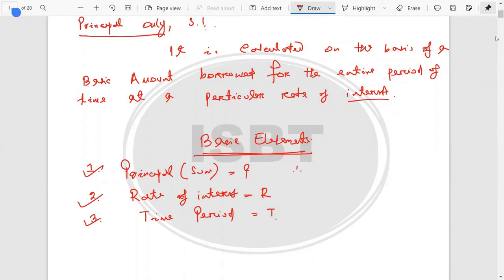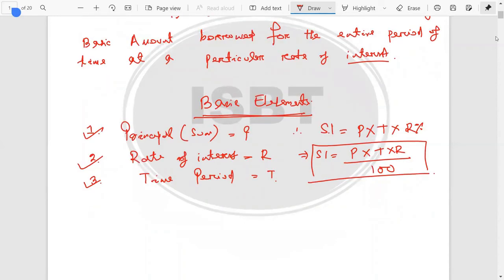The Principle, Rate of Interest, and Time will be required to find out the SI. So you can find the SI. The formula of SI is equal to P into T into R percent. So this can be written as P × T × R divided by 100.